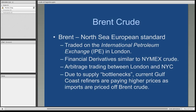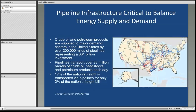Currently, there are some supply bottlenecks in North America whereby a lot of the domestically produced crude oil is unable to get to the large refinery corridor in the Gulf of Mexico. As a result, they have to increase the amount of imports, and those imports are generally priced off of the Brent crude pricing. So currently, our refiners along the Gulf of Mexico are having to pay a little more than the WTI price for domestically produced crude oil.